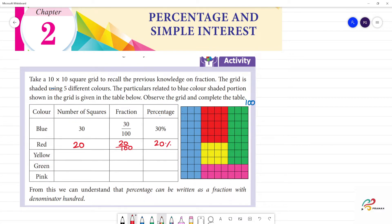Next is yellow. Counting: 1, 2, 3, 4, 5, 6, 7, 8, 9, 10, 11, 12. Then 24 divided by 100. If you look at the percentage, 24 percent.